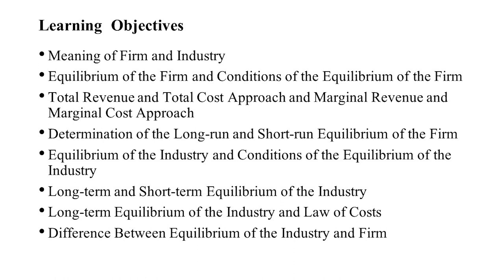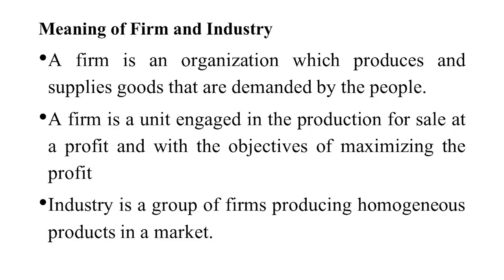Firstly, we discuss what we mean by firm and industry. A firm is an organization which produces and supplies goods that are demanded by the people. A firm is a unit engaged in production for sale at a profit, with the main objective of maximizing profit. This is the main objective of any firm — to produce goods and supply to the customer as per demand.